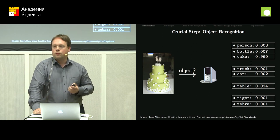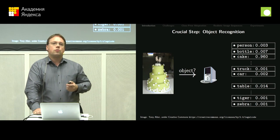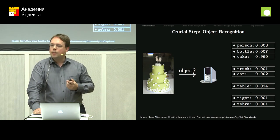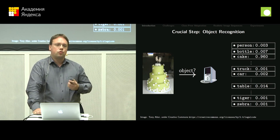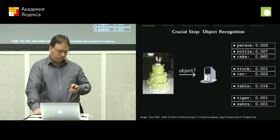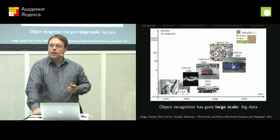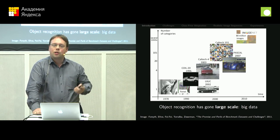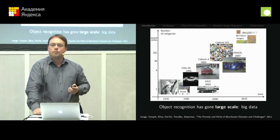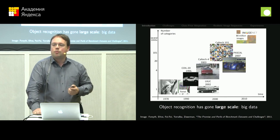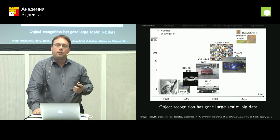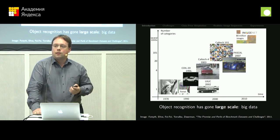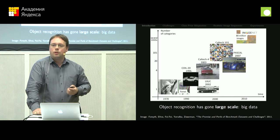One possibility is to assign a probability to each possible class. So the computer should assign probabilities of how certain it is that a certain object is present in the image — in this example it's very certain that the person is not there but that the cake is there. Object recognition has a long history in computer vision and has grown pretty large. We have more and more data available, larger datasets, and the number of categories has grown. When it started there were a few hundred images and maybe five categories to distinguish. Now state-of-the-art datasets like ImageNet have millions of images and thousands of categories.